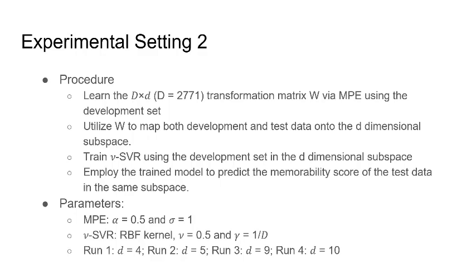For each of the subtasks, we submit four runs. The only difference between these runs is the dimension of the subspace. The dimensions are 4, 5, 9, and 10 for run 1, run 2, run 3, and run 4 respectively.